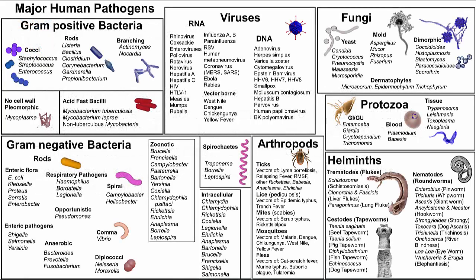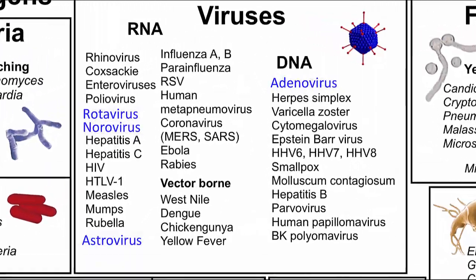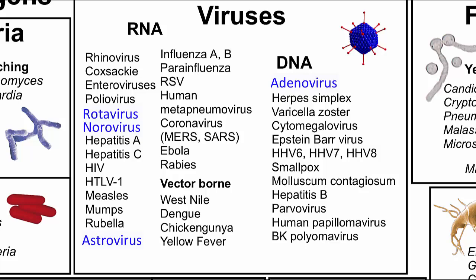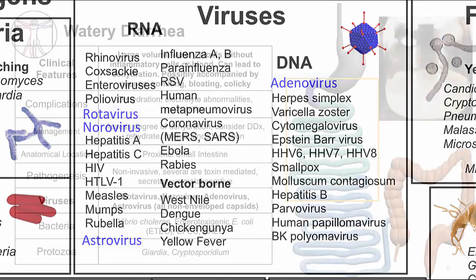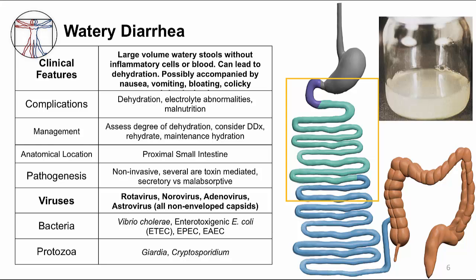As you can see from our pathogen list, the four main viruses that cause watery diarrhea are all non-enveloped viruses, which make them resistant to being destroyed or desiccated. The clinical features are indistinguishable from each other and from diarrhea caused by bacteria. In the next several slides, I'm going to describe details of each one of these viruses that cause watery diarrhea.